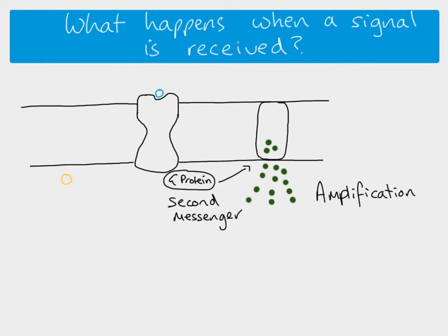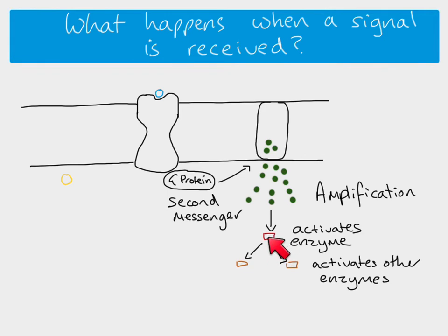Now these second messengers are also signaling molecules, they're just signaling molecules that are now inside the cell. They're very small, they spread out throughout the cell, and as they spread throughout the cell, they activate enzymes. Those enzymes then activate other enzymes. One enzyme molecule is able to activate many other enzyme molecules, so what you get again is more amplification. Each second messenger molecule activates an enzyme which can then activate many other enzymes which can activate many other enzymes.